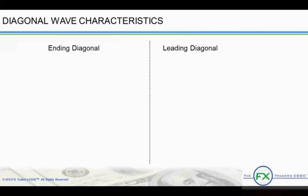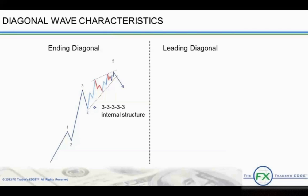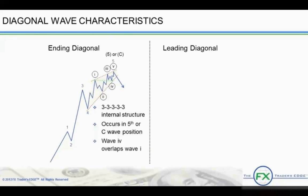Ending diagonals and leading diagonals have different characteristics and internal structures. Ending diagonals are more common than leading diagonals. The internal structure of an ending diagonal is comprised of all three-wave or corrective patterns, meaning all of the waves of the fifth wave subdivide into three waves. Ending diagonals occur in the fifth wave position or in the C position in the ABC correction, and wave 4 overlaps wave 1. Ending diagonals typically occur when the market is about to change direction; when it occurs in the wave 5 position in higher degrees, a major reversal is about to take place. It slows down in anticipation of a change in direction. According to Elliott, it often occurs when the preceding move has gone too far too fast. In classical technical analysis, an ending diagonal is known as a rising wedge.